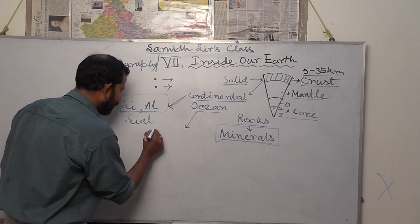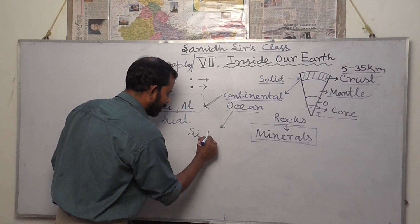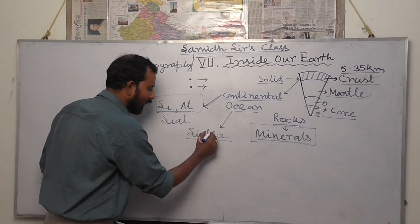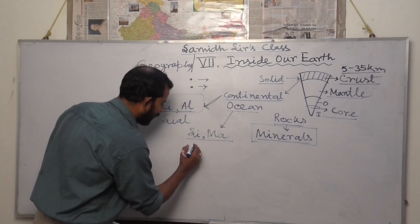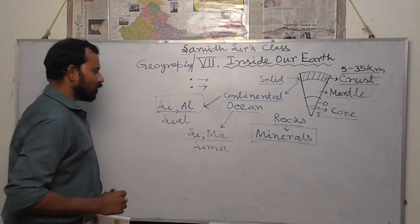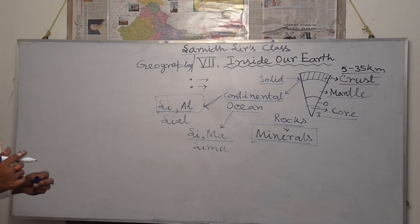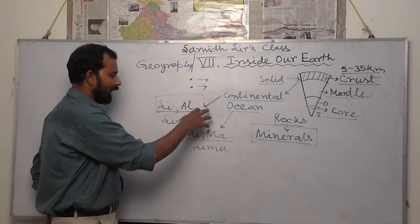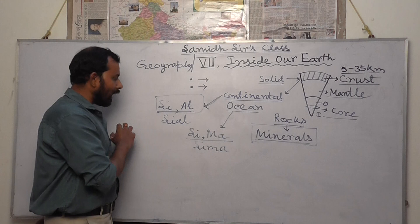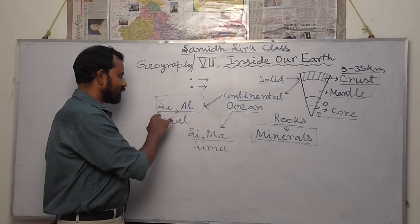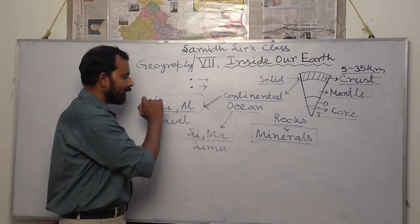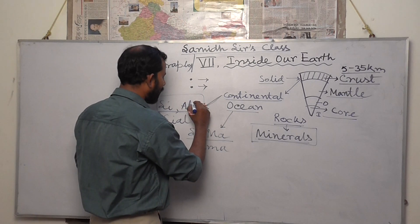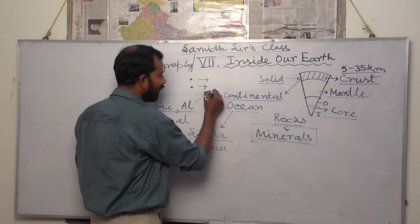The oceanic section is made by silica and magnesium. Combined, silica and magnesium are referred to as SIMA. Regarding characteristics, aluminium is a comparatively light material — the continental section is made by a comparatively less dense material. Aluminium is light, and that is why the continental crust remains on the upper side.